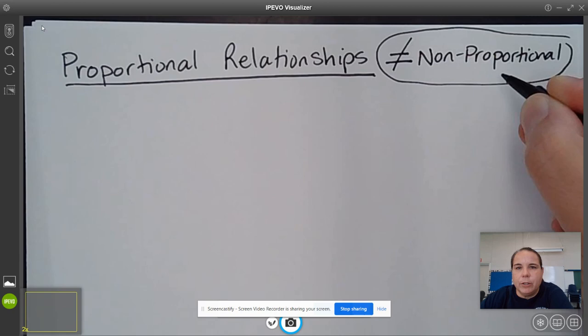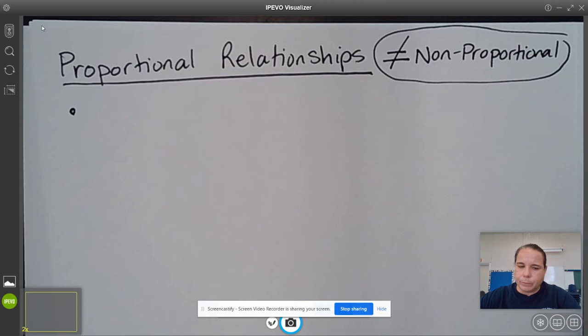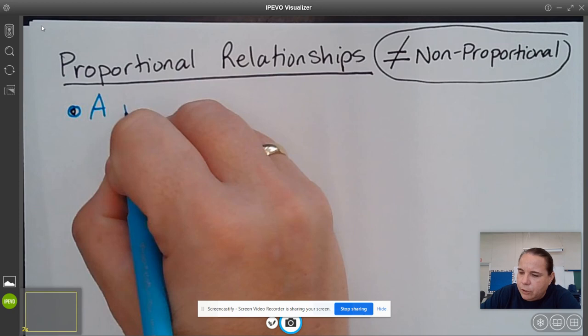All right. So part of what we want to be able to do is determine, is this relationship proportional or is it non-proportional? So a proportional relationship. So if we just look at this basic definition, textbook definition, it is a relationship